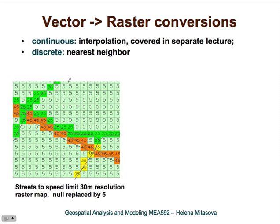Vector to raster conversion for continuous data can be pretty complicated and involves spatial interpolation, so we will devote a special one or two lectures to this topic.